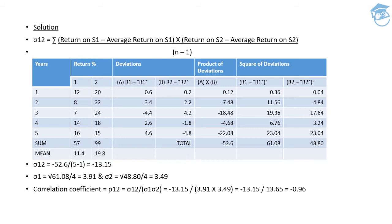Whatever deviations I obtain, I just need to multiply deviation A with deviation B to get the product of deviations A into B. Then I need to square those deviations — squaring deviation A and deviation B separately — and I'll get those respective figures.